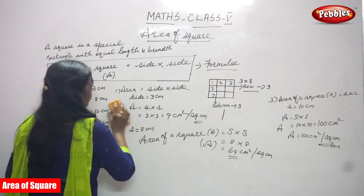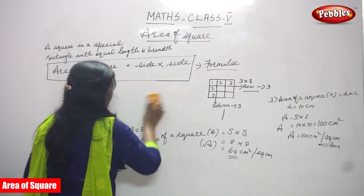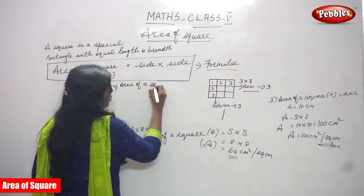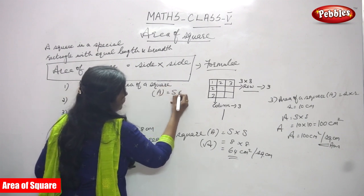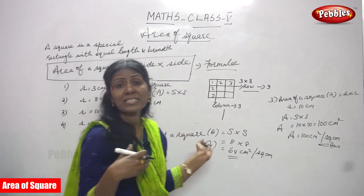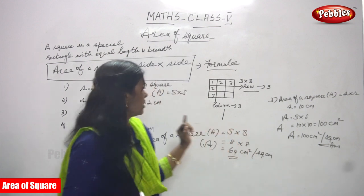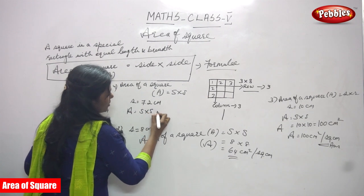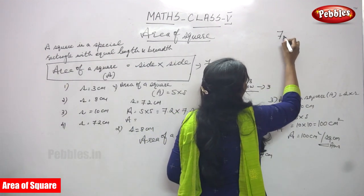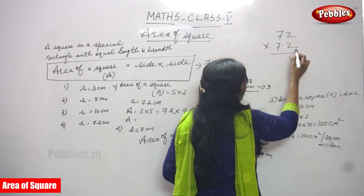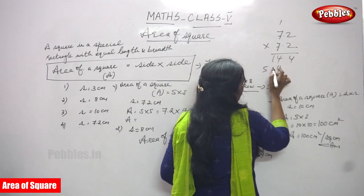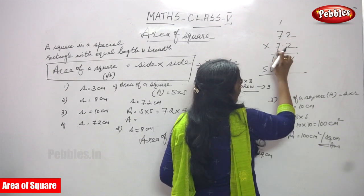Now we are going to solve the fourth problem. Area of a square — A is equal to side into side. s is equal to 7.2 centimeters. Whatever unit is given in the question you have to write as it is. So area means side into side, that is 7.2 into 7.2. Multiplying: 2 twos are 4, 7 twos are 14, carry over goes to the top, 7 sevens are 49, 49 plus 1 is 50.